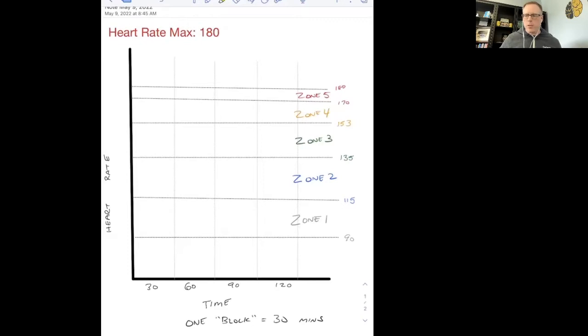So when you get a prescription from a Catalyst coach, what you'll see are so many blocks of zone one or so many blocks of zone two that we want you to accomplish a week. And a zone block is a 30 minute block of time that's within that zone as much as you possibly can.